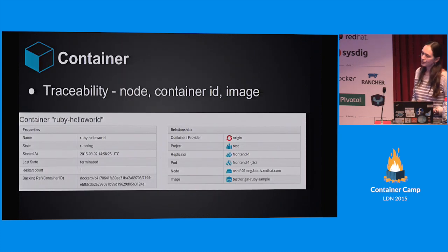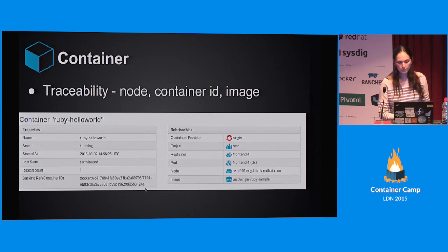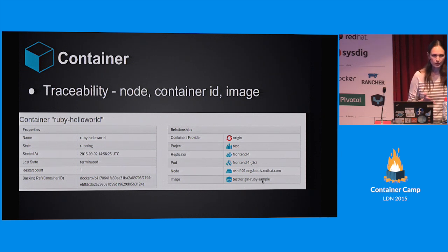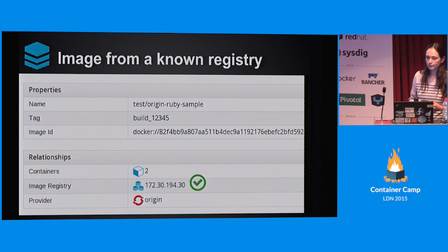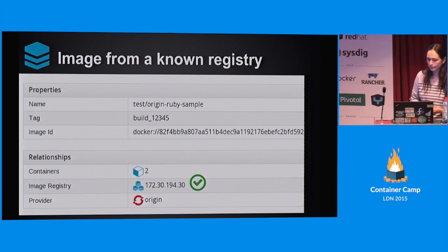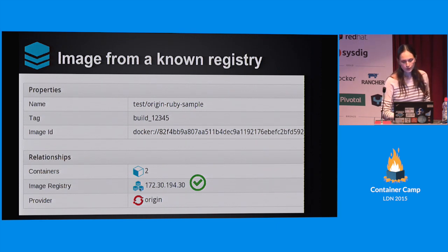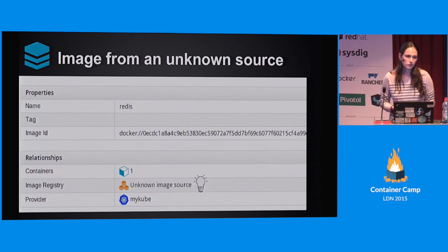A container is definitely a very important part of the whole equation. This is information collected for traceability - we know on which node the container is running, we know which pod it is part of, we see the Docker ID is collected here, and also very important - the image. What is the image that is running in the container? We also want to know what the registry it's coming from, whether it's a certified registry, whether this registry can be used on that environment. We provide information on what registry exactly this image is coming from and how many and which containers are using that image. In some cases, if that information is not reported, a warning is issued to the administrator - maybe this is an image that was manually imported to the machine and is not supposed to be here.